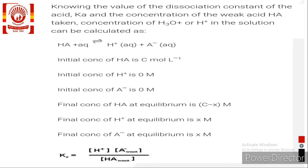Knowing the value of the dissociation constant Ka and the concentration of the weak acid HA, we can calculate the concentration of hydronium ion.